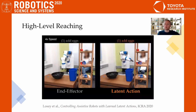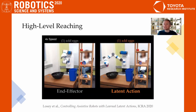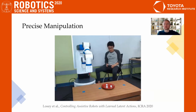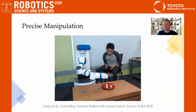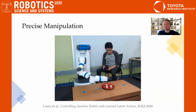In our prior work, we addressed the first challenge. We learned latent actions that enable users to intuitively guide assistive robots towards their high-level goals. Hong here is using our algorithm, which makes high-level reaching much smoother than directly teleoperating the end effector. But even with this intuitive embedding, precise manipulation is still hard.